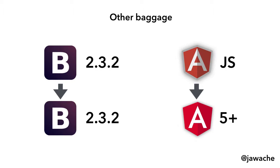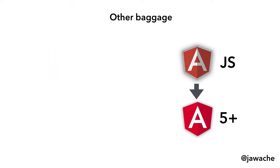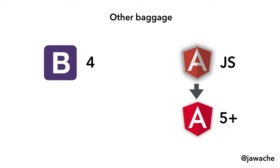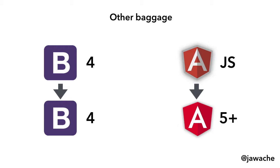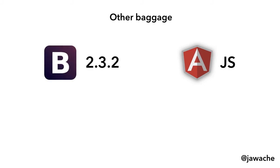Another option is to first migrate to Bootstrap 4 within your AngularJS application, and then migrate to Angular 5 — giving you a Bootstrap 4 Angular 5 application. But that means writing a lot of throwaway code in your AngularJS application. You'd be changing all your directives and templates, and most of that work gets thrown away when you eventually migrate to Angular 5.